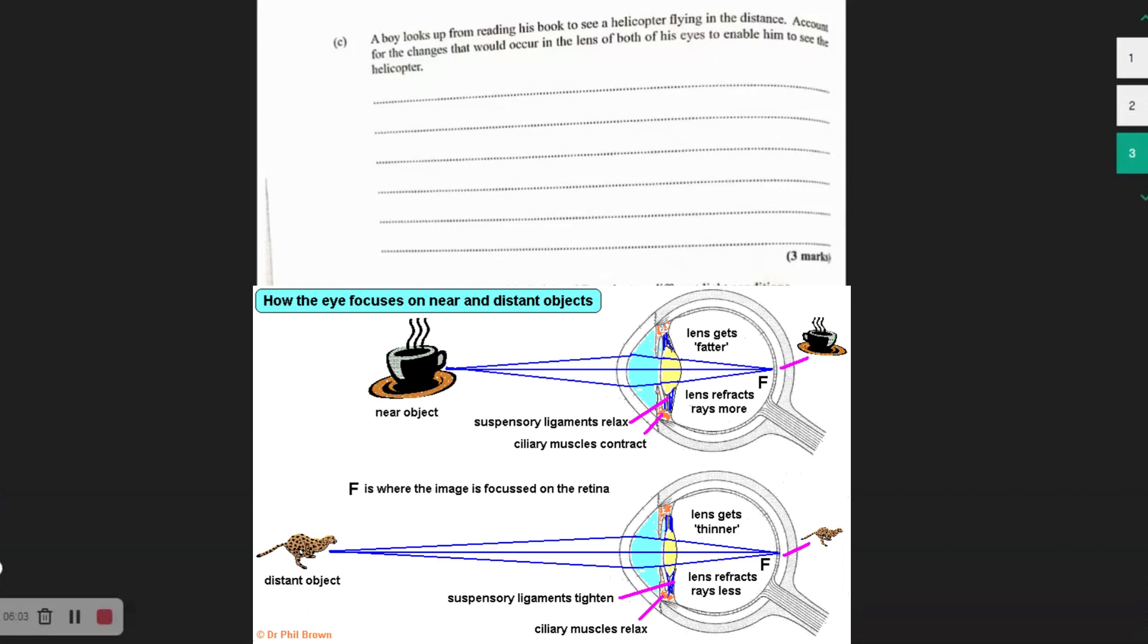But when we are looking at something far, so just like the boy, now he is looking away from the book to something at a distance. Remember light rays coming in from an object at a distance comes in at a parallel angle. So we don't have much refracting to do, and therefore the lens is supposed to be thinner.